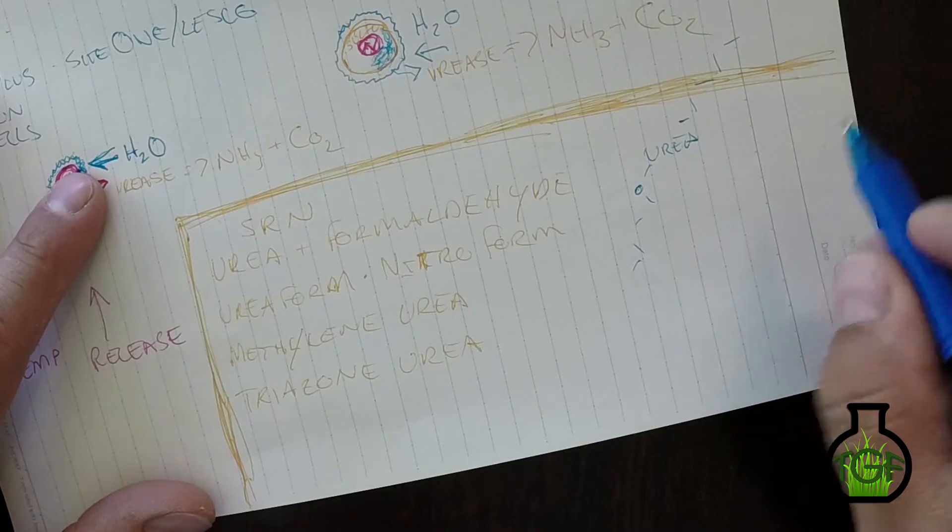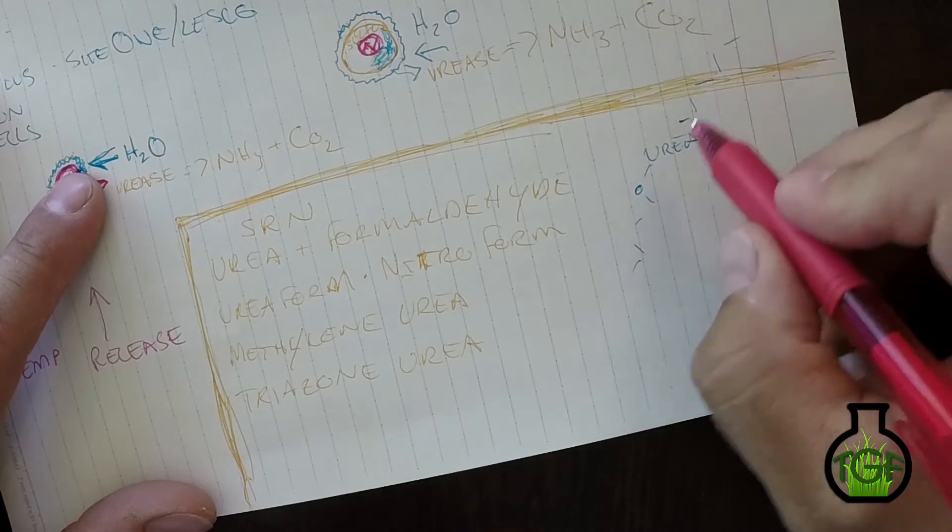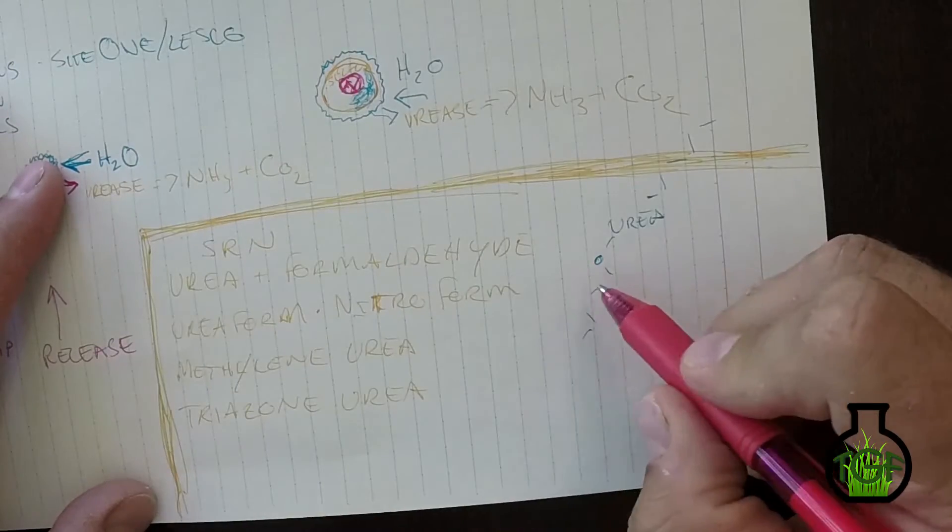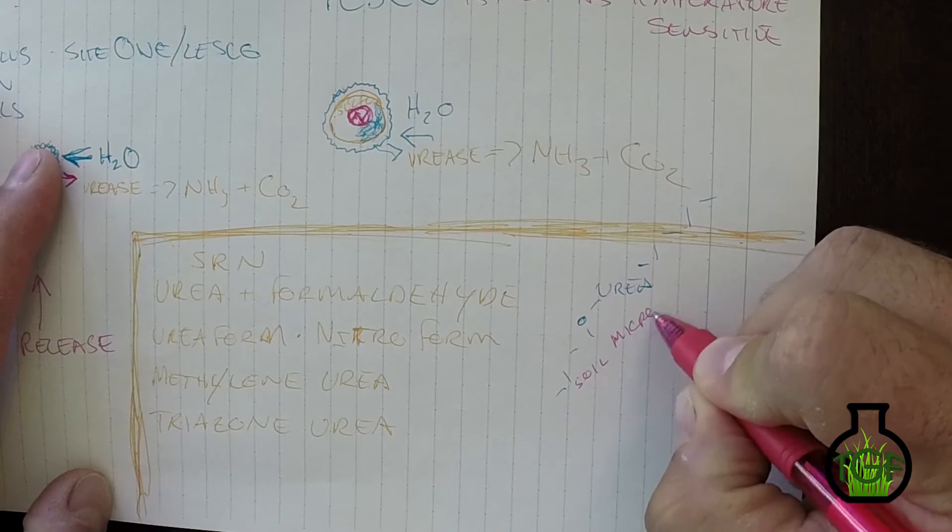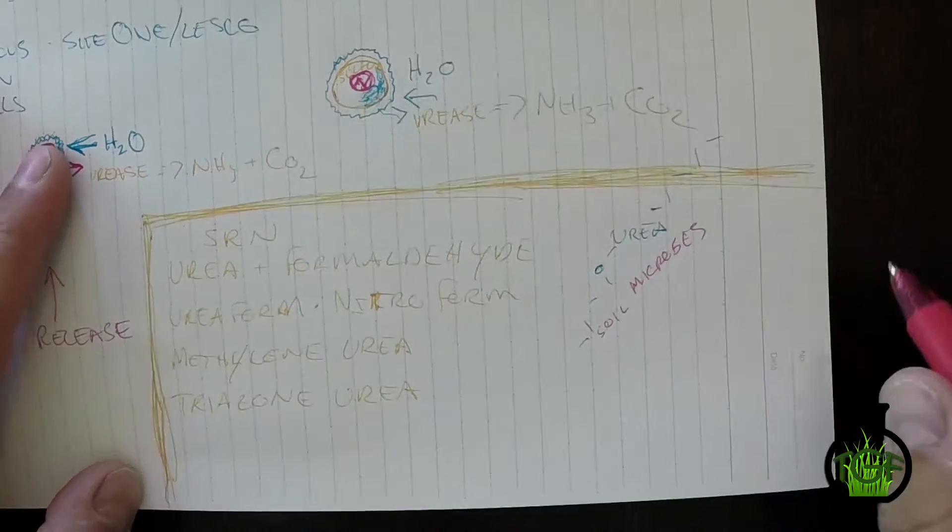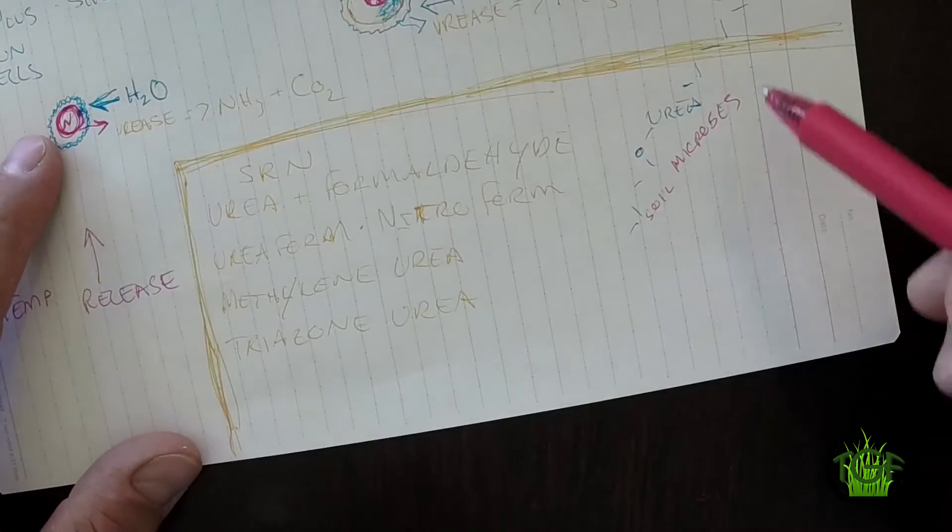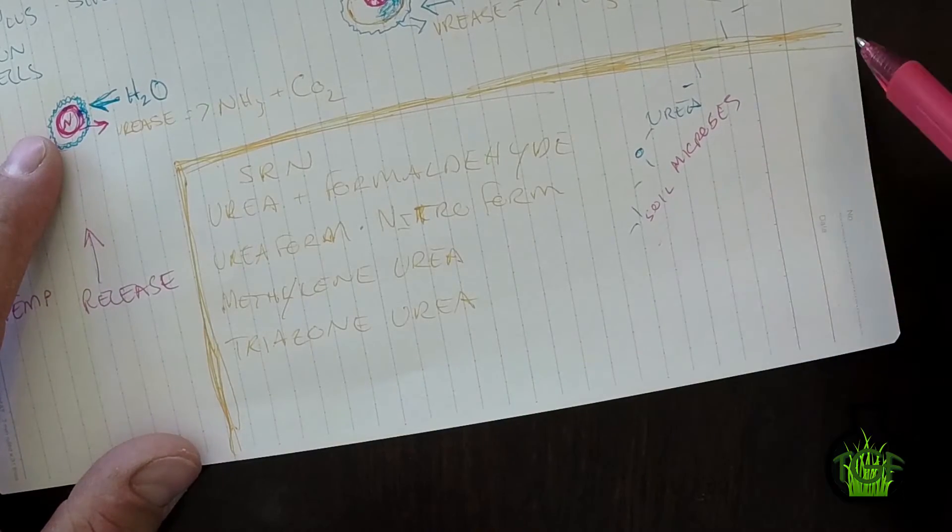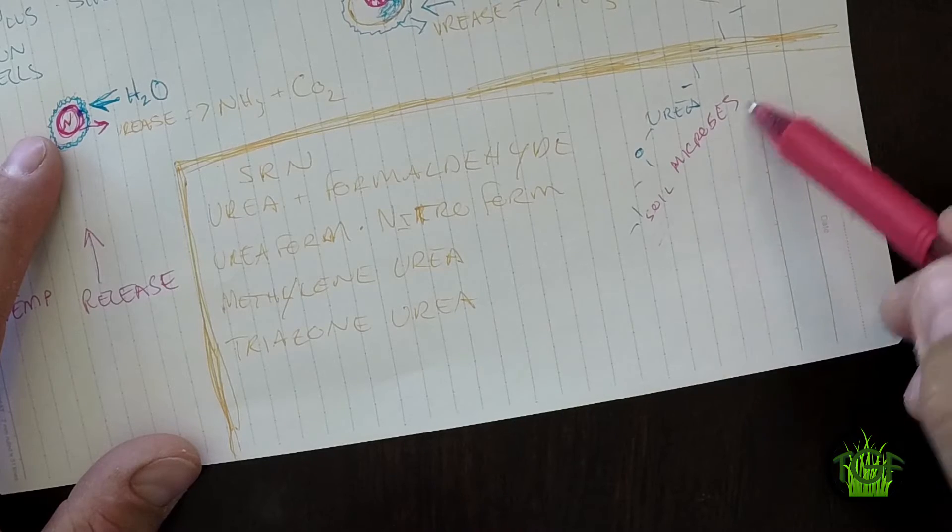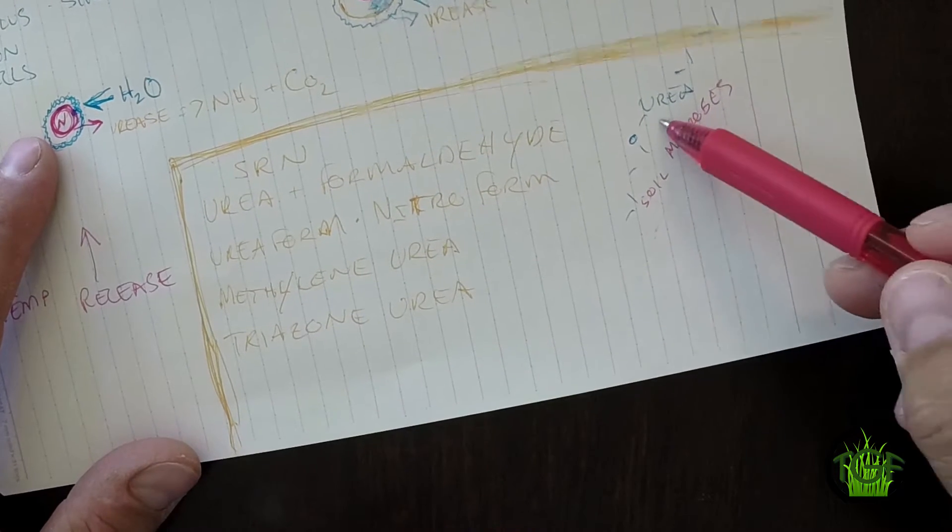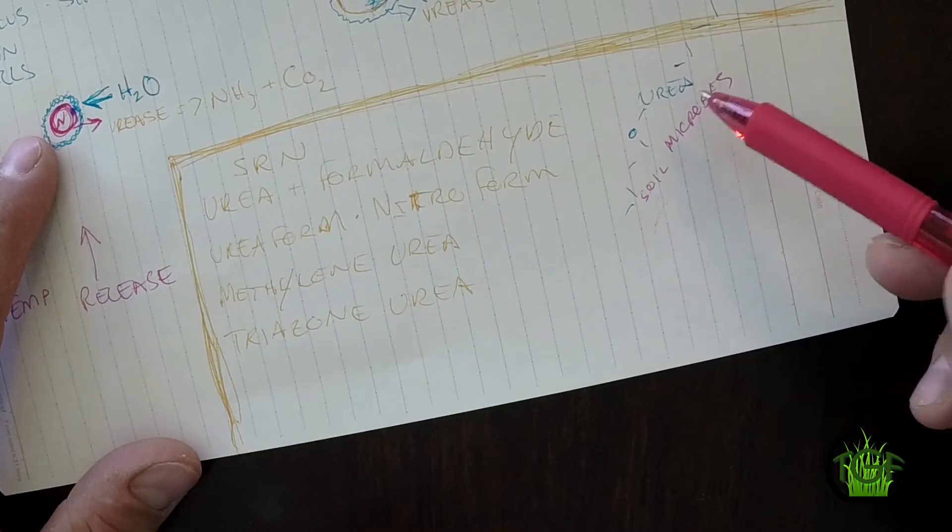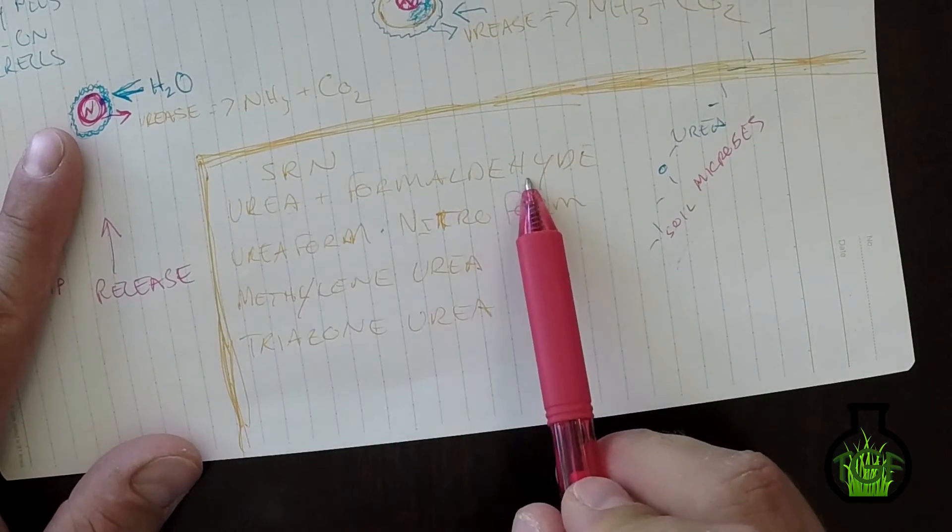The way these chains are broken down is by soil microbes. All of these will be consumed by soil microbes, and depending on soil temperatures and the amount of microbial activity you have going on in your soil will determine the rate of release of these urea plus formaldehyde forms.